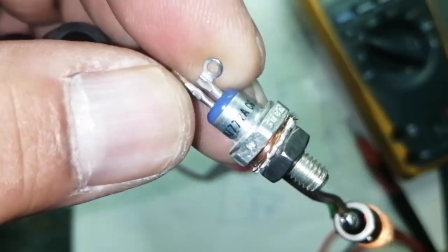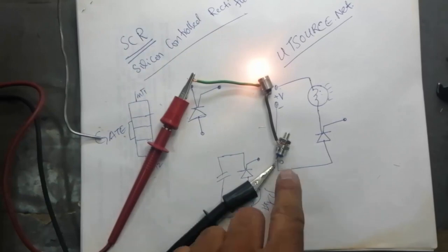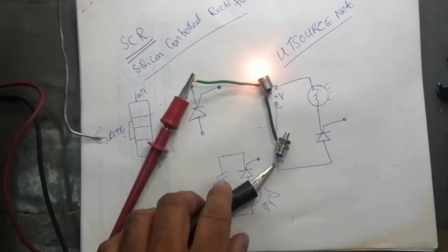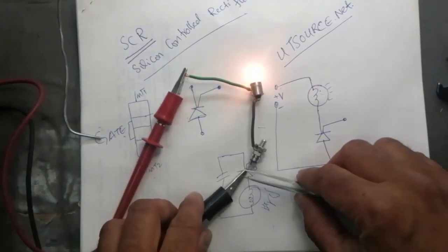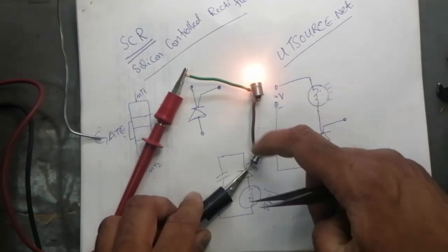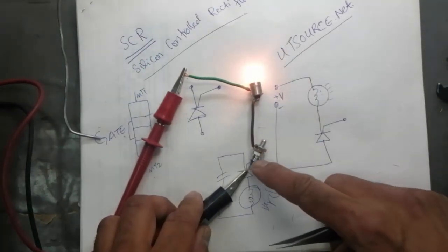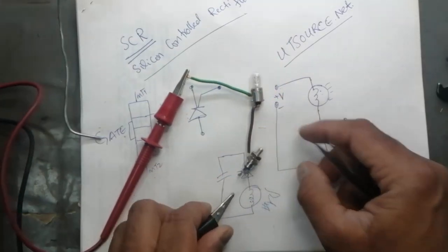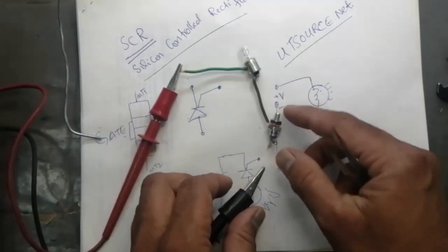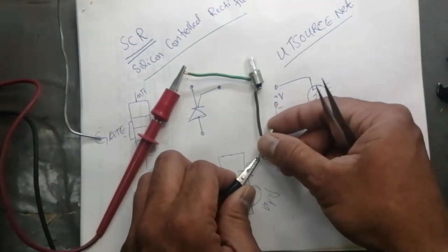2N1772A. Once a signal is available here, after that you remove the signal, but once it is triggered, it becomes a short circuit, becomes a closed switch. Until unless you remove the power, after that it is reset.